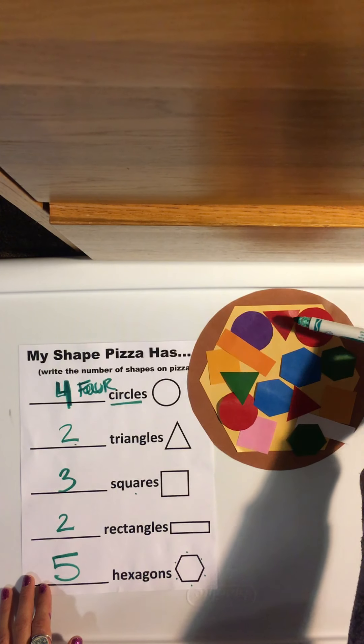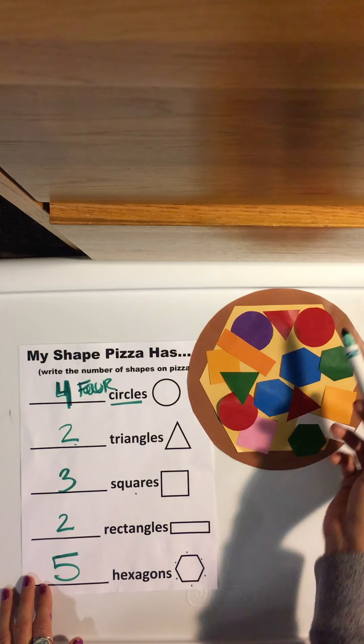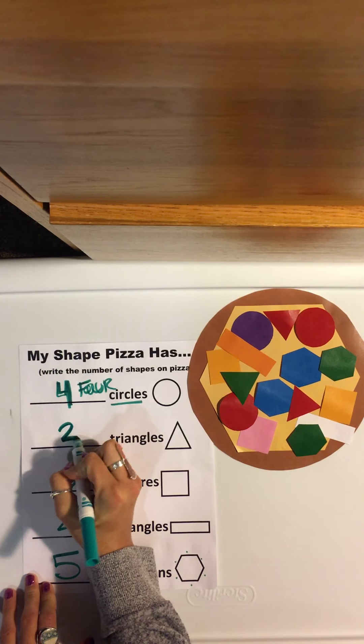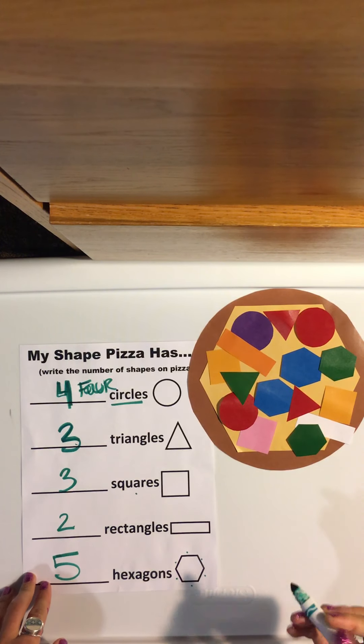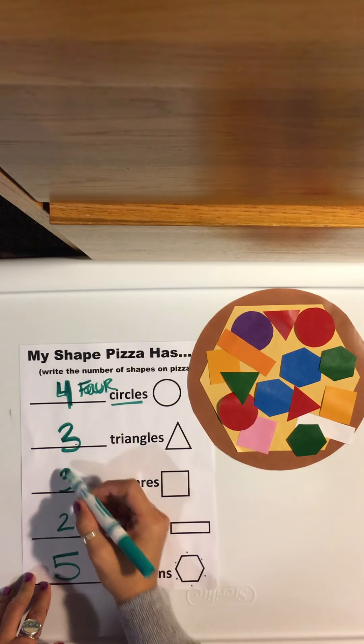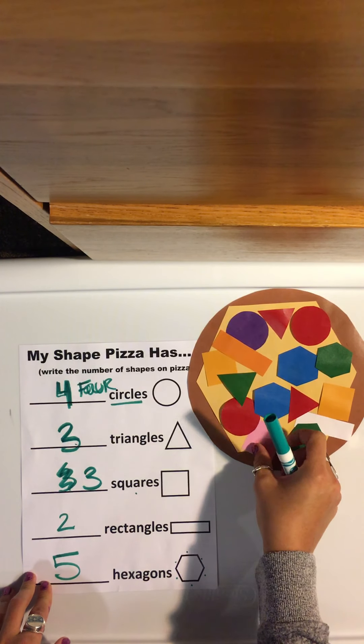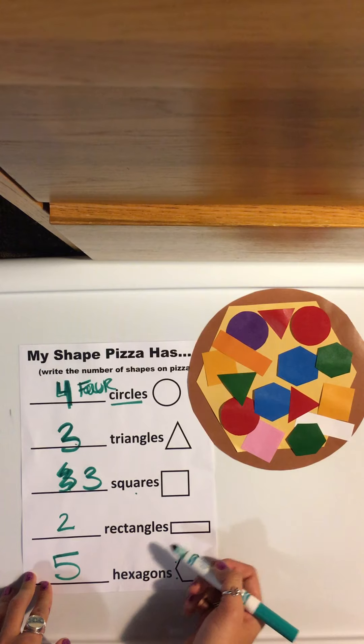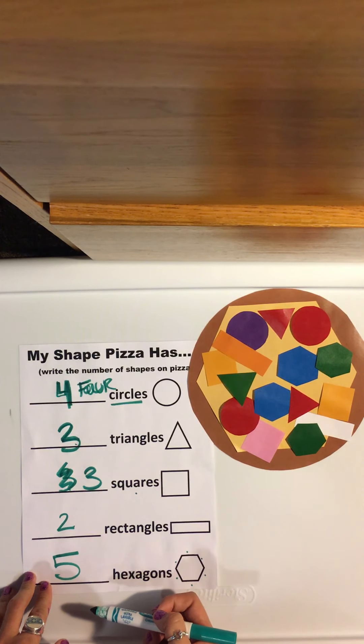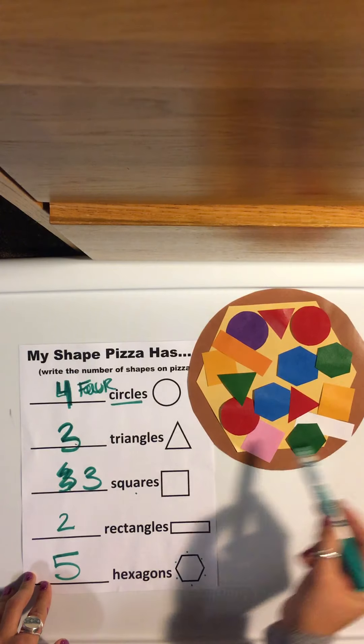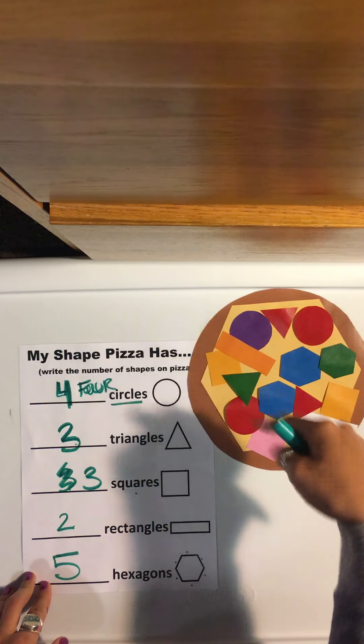So two triangles, one, two. Oh, wait, we actually have three on this one, so we're going to fix that. Three triangles, two squares. Oh, no, it is three squares. I forgot the pink one. Two rectangles, yep. And do we have five hexagons? I think so. We have our big cheese. One, two, three, four, five.